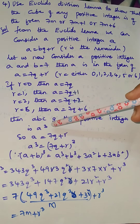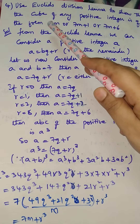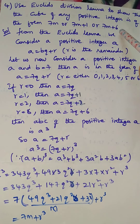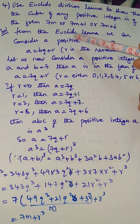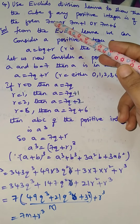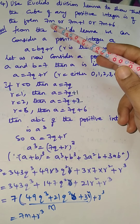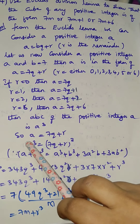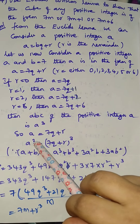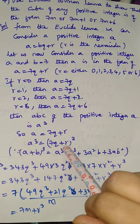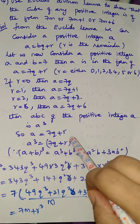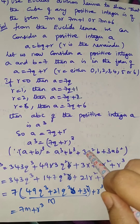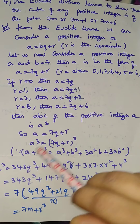Here cube is given, so we have to take a cube. The values can be 7m, 7m plus 1, or 7m plus 6. He can also give 3p or 6m — you have to use the same method. A cube equals 7q plus r whole cube. Here a is 7q and b is r. The (a+b)³ formula is a cube plus b cube plus 3a²b plus 3ab².